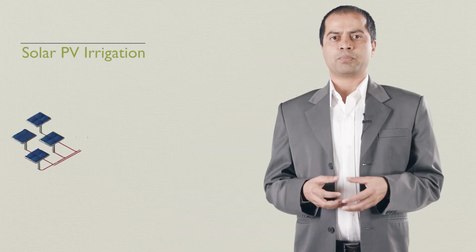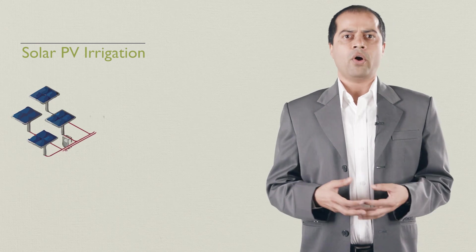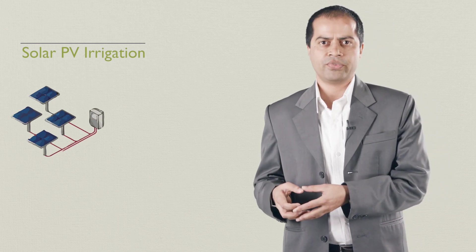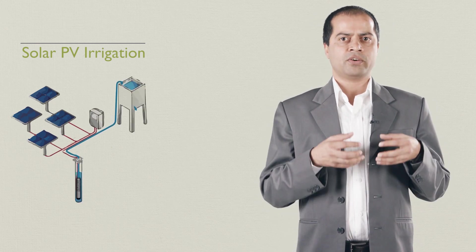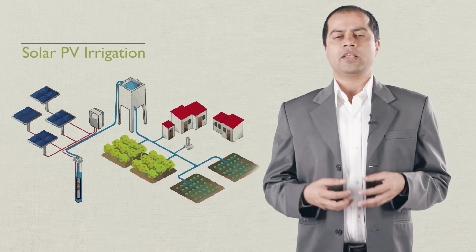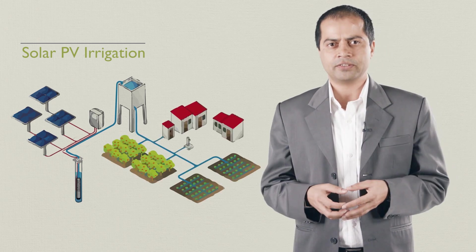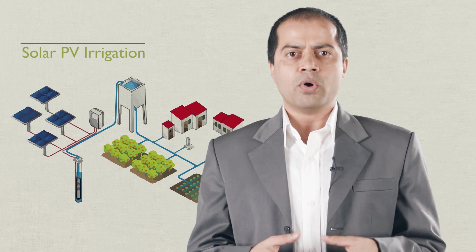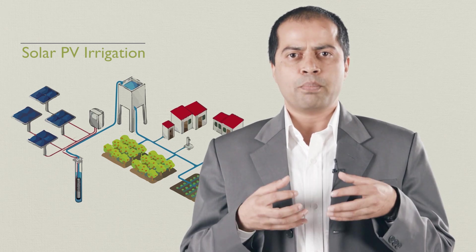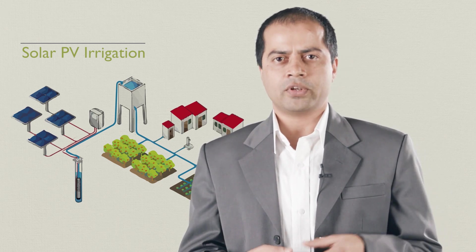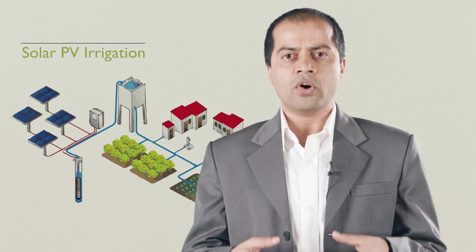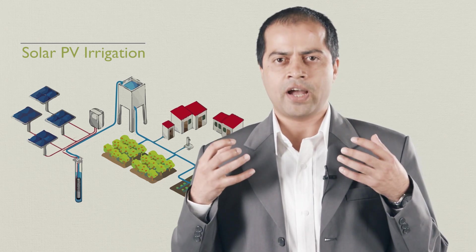A solar PV operated irrigation system can overcome these problems. Such systems usually consist of four main parts: a photovoltaic array to produce electricity, a control unit to monitor the system, a water pump to lift the water to a storage tank, and an irrigation system to distribute the water. You will learn more on this once you complete the assignment of this week. There, you will design your own PV irrigation system for the site of your choice.